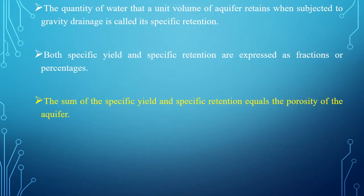The quantity of water that a unit volume of aquifer retains when subjected to gravity drainage is called specific retention. Both specific yield and specific retention are expressed as a fraction or percentage. The sum of specific yield and specific retention equals the porosity of the aquifer. This is most important: the addition of specific yield and specific retention must be equal to the porosity of the aquifer.